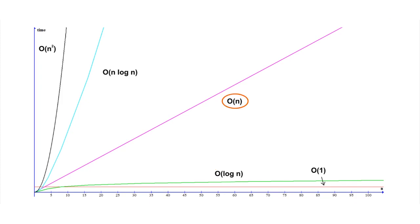And then we have the line marked order n, so that's a linear function. Then we have the order n log n teal colored line toward the left, and that is called log linear. And then finally we have a quadratic function, that black curve that climbs pretty steeply there that says order n squared.